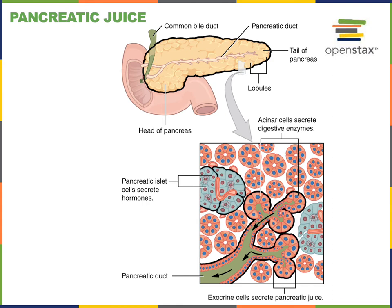The majority of the cells of the pancreas are exocrine cells known as the acinar cells. Acinar cells secrete pancreatic juice into the pancreatic ducts, then pancreatic juice drains through the pancreatic ducts into the duodenum, where pancreatic juice mixes with acidic chyme from the stomach that enters the small intestine, first entering the duodenum, the most proximal region of the small intestine.